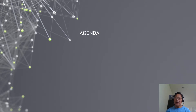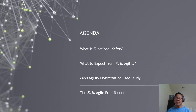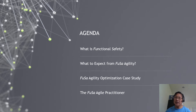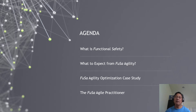Today's agenda consists of four points: What is functional safety? What do you expect from FUSA Agile teams? I will also present a FUSA optimization case study that uses Scrum, and I'll conclude using a few words of wisdom for the FUSA Agile practitioner.